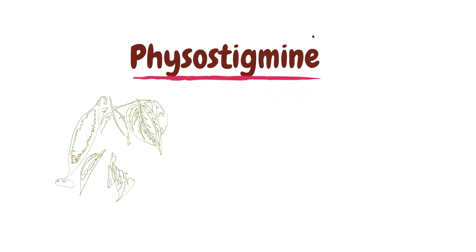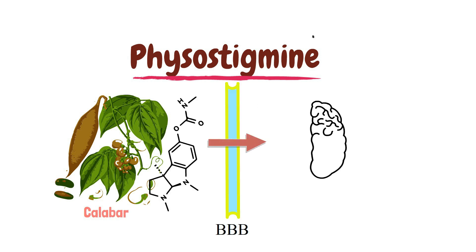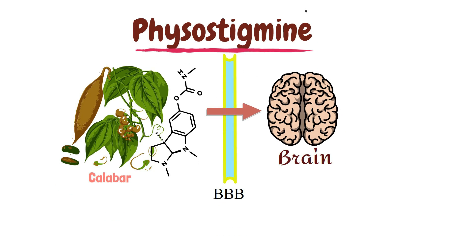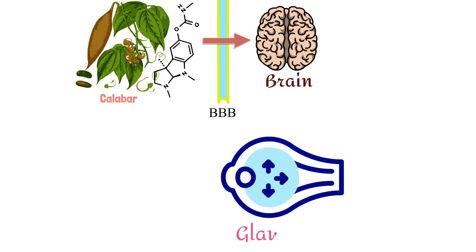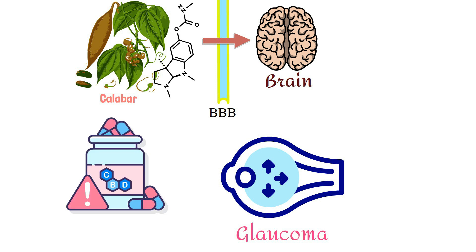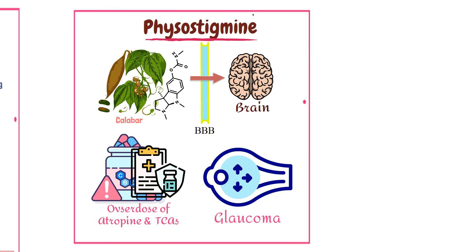Next, we have the drug physostigmine. Physostigmine is a natural alkaloid of the Calabar bean, which can cross the blood-brain barrier. It is therapeutically used for chronic glaucoma and in the treatment of overdoses of drugs with anticholinergic actions, such as atropine and tricyclic antidepressants.